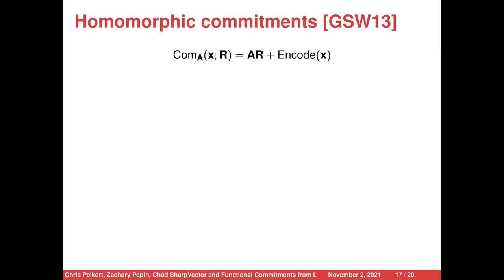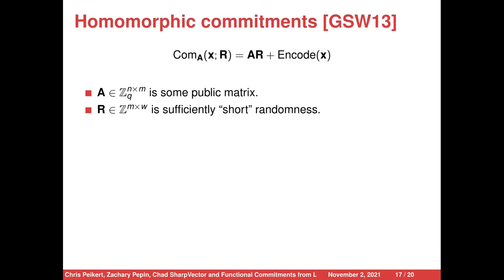The base of our functional commitment scheme are homomorphic commitments, first introduced in GSW13. A commitment to X with randomness R under a public matrix A equals AR plus encode(X). The key point is that the scheme has additive and multiplicative homomorphisms, and so if we want to emulate arbitrary Boolean functions, addition and multiplication are enough since we can get AND and OR gates from them.